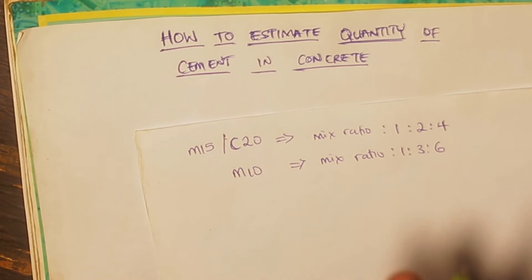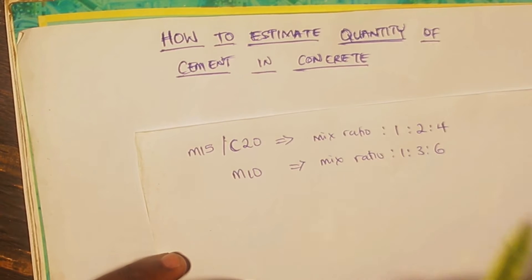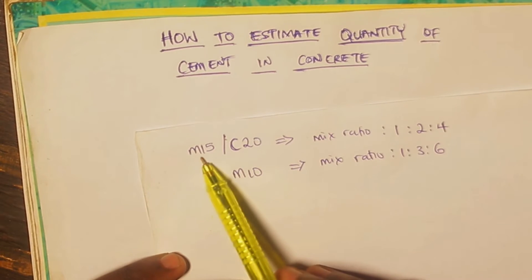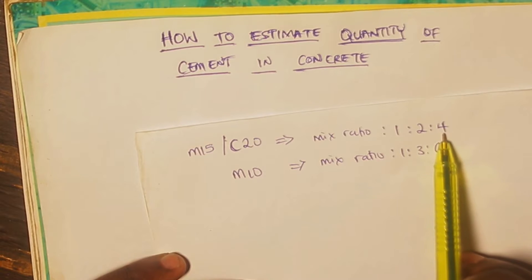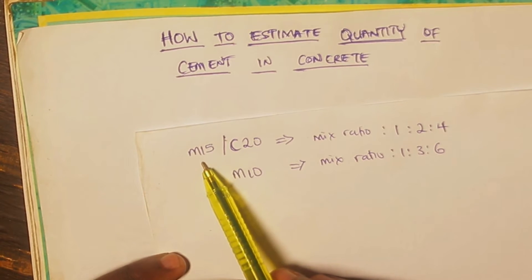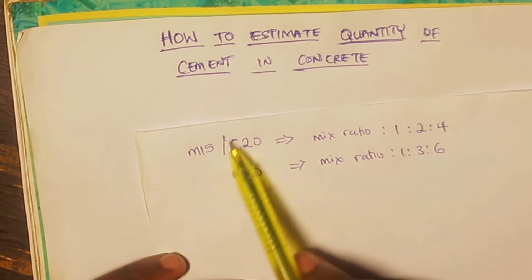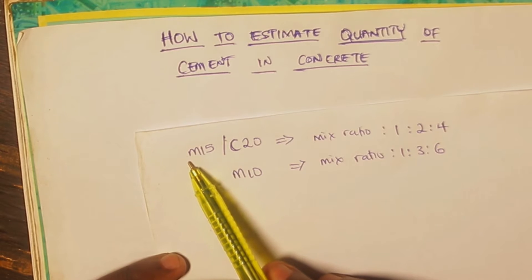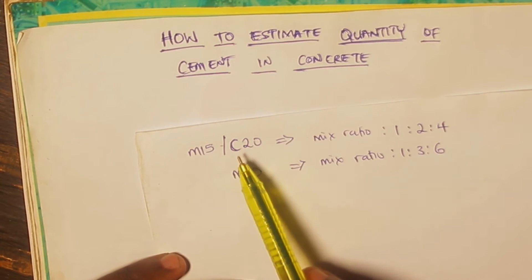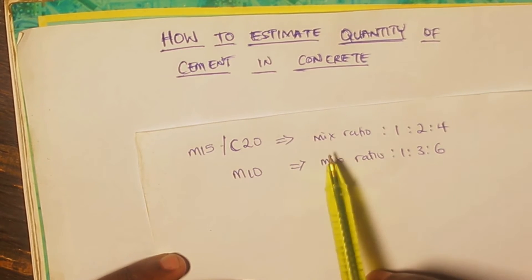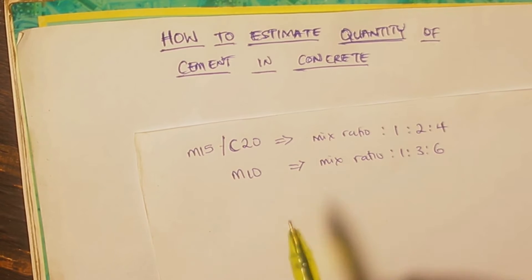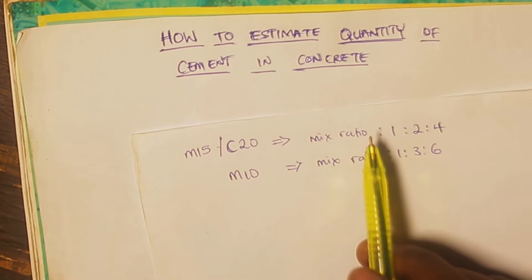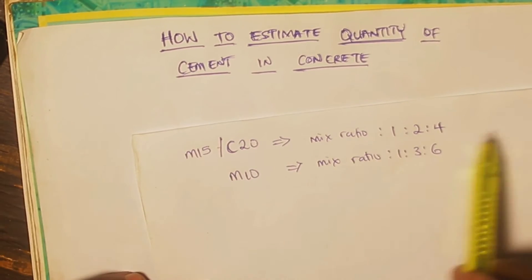These two classes of concrete grade are dependent on the type of testing used to test the strength of the concrete. You may see one grade overlapping with another when it comes to concrete mix. For example, M15 and C20 have the same concrete mix ratio. The only difference is that M15 is based on a test carried out using cubes, while the C class tests concrete strength using a cylinder. I'll explain further in a separate video. When you look into your bill of quantities and have been given a particular grade of concrete, just pick up your phone, go into Google, and look up the concrete mix for that concrete grade.